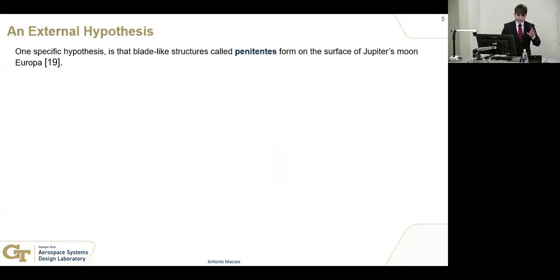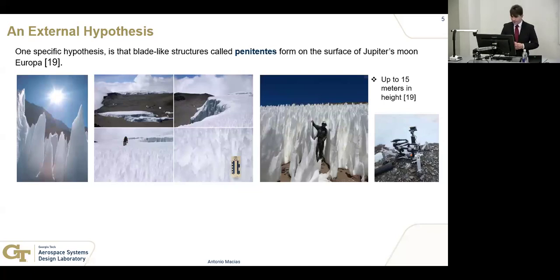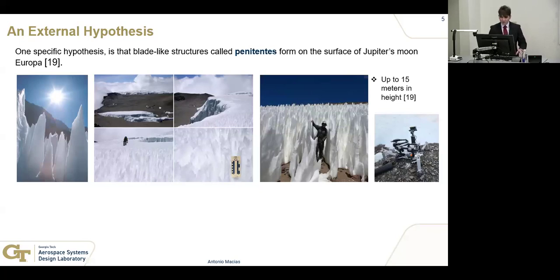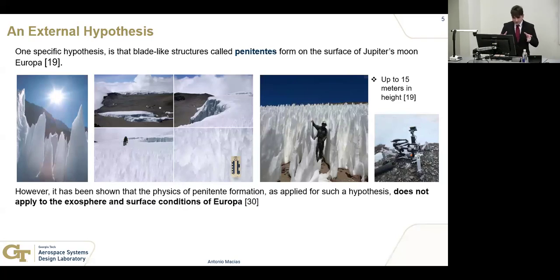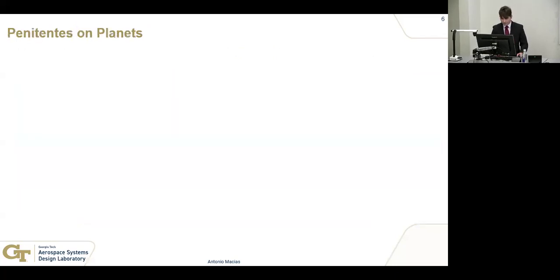There is one very specific hypothesis: that structures called penitentes form on the surface of Jupiter's moon Europa and can actually be several meters in height. Here you can see images of penitentes on Earth — they typically form on high-altitude snowfields and can reach up to four meters tall, the tallest ever recorded. The small figure shows the first prototype of the Europa lander from JPL. The issue is that the physics used to construct this hypothesis might not apply for the exosphere conditions of Europa. Nevertheless, if penitentes exceed roughly 50 meters in scale, they would make it difficult to navigate if we ever land on Europa.